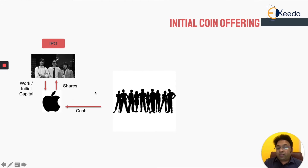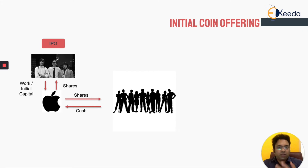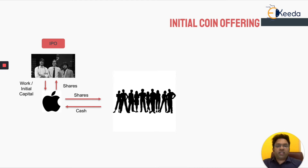What do they get in return for investing into the company? Shares of the company. These founders had 33, 33, etc. So they'll give 10% of that to the general public, saying one share is, let's say, a dollar. So if a person invests $10, they'll give him 10 shares of Apple. That's how these people will get the shares.